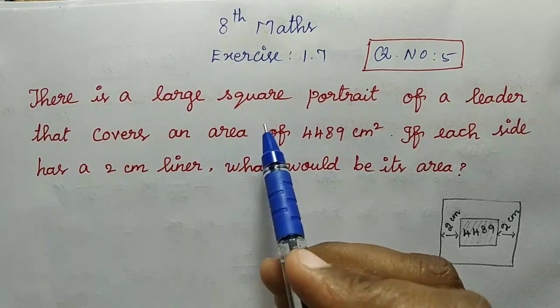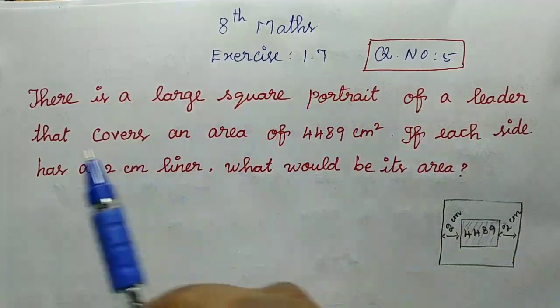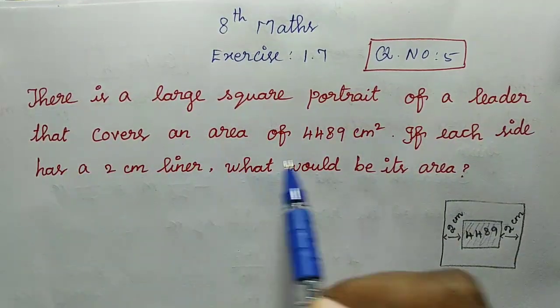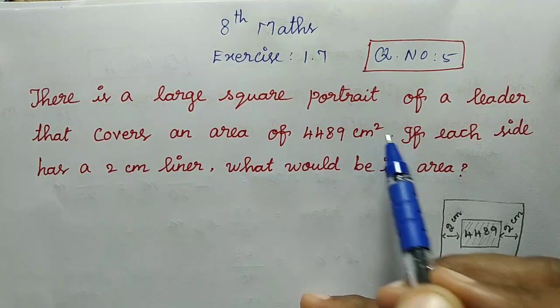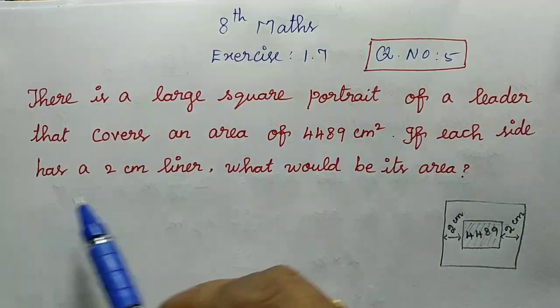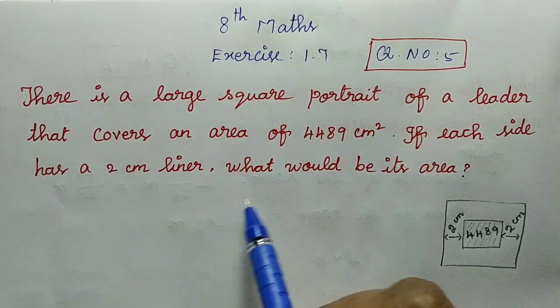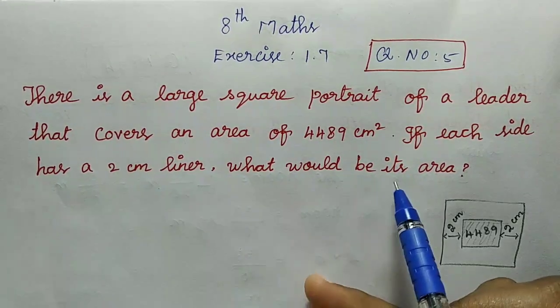There is a large square portrait of a leader that covers an area of 4489 cm square. If each side has a 2 cm liner, what would be its area?